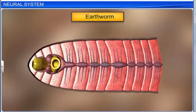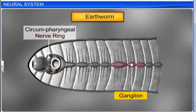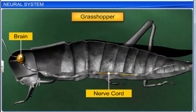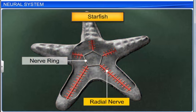The neural system of earthworms consists of a circumferential nerve ring and a single, solid, ventral, and ganglionated nerve cord. Insects have a better organized neural system. Starfish do not have a brain, and its nerves are radially organized, with a connecting ring in the center.